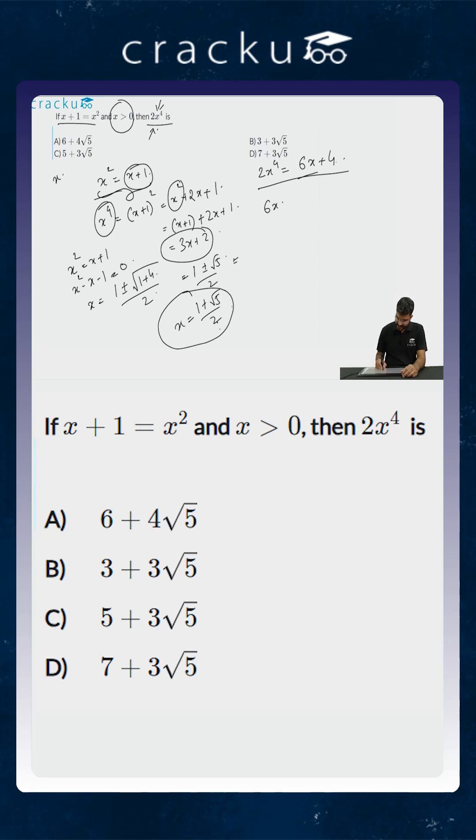So 6x equals 3 into root 5 plus 1, and when you are adding 4, we are going to get 3 root 5 plus 7. So the answer in this case is option D, 3 root 5 plus 7.